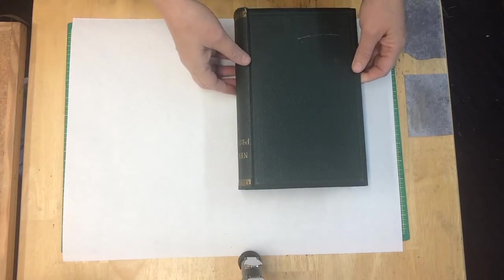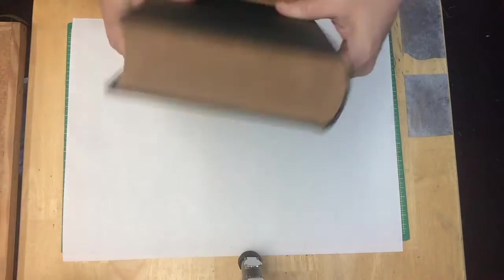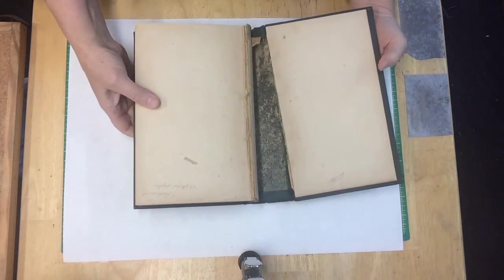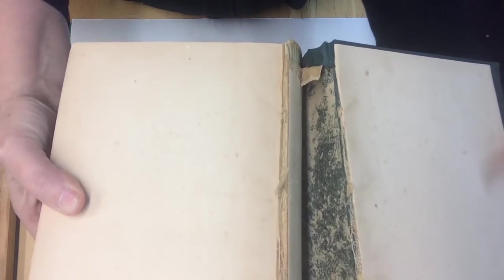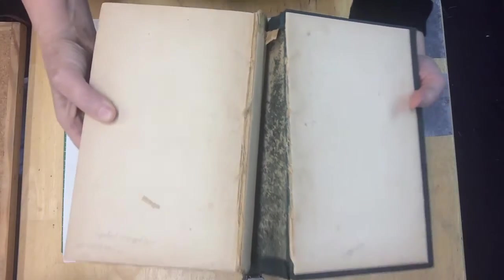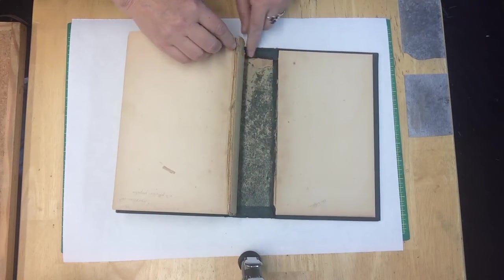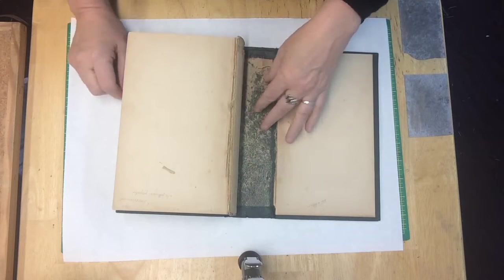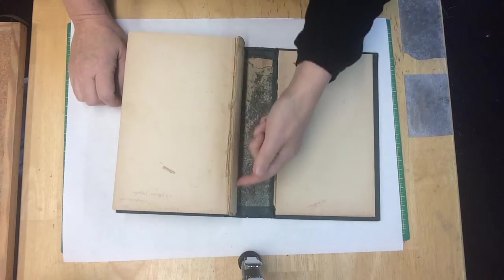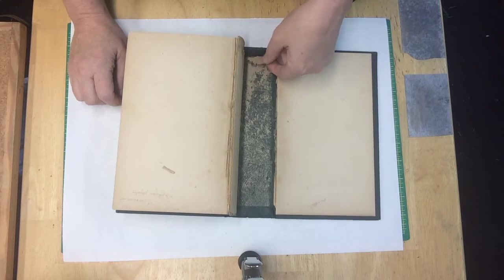Set that aside. So the client wants this book to just be back in its case. As you can see, it's got the problems with stuff being stuck where it shouldn't be stuck. The liner that should be here, the case liner, has been glued to the text spine is what it looks like happened.